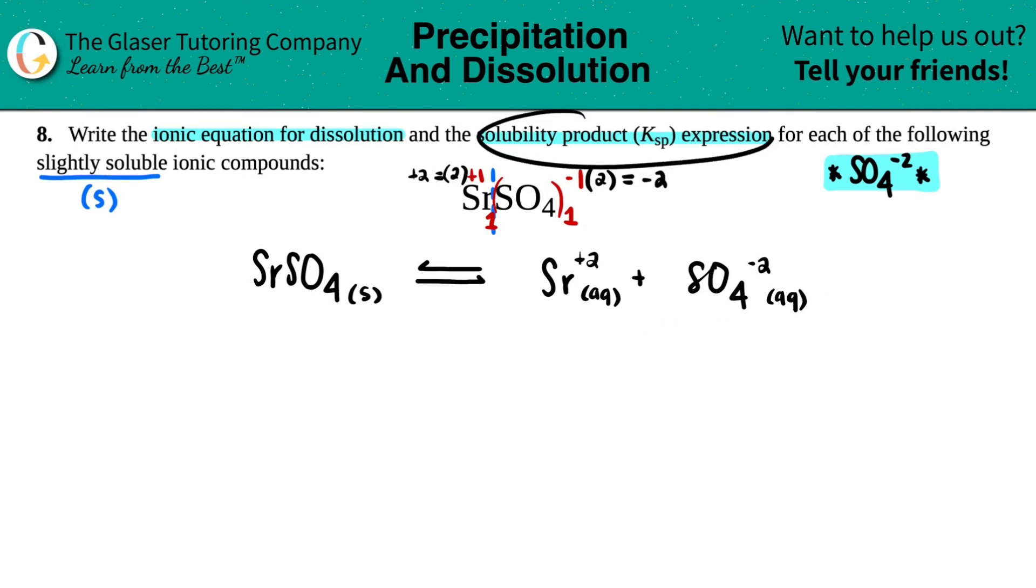Now we have to use this to find out the Ksp expression. And the Ksp expression is just a simple formula that's this one right here. Ksp is just equal to the concentration of the products. Because your reactant is always going to be a solid. And remember, no solids or liquids allowed in any K expression. So Ksp, there's no exception.